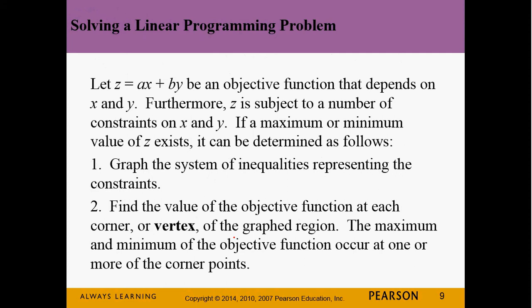To solve a linear programming problem, we've got the objective function and we're subject to a bunch of different constraints. If a minimum or maximum value of z exists, it can be found like this: we graph the system of inequalities representing all the constraints, find the value of the objective function at each corner or vertex of the feasible region, and the maximum or minimum has to occur at one of those corner points.